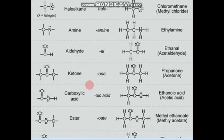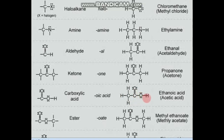Next is carboxylic acid. When carbon is double bonded to oxygen and also directly has an OH attached — C(=O)OH — this is a carboxylic acid type of compound. For example, CH3-C(=O)-OH is called ethanoic acid, and the common name is acetic acid.